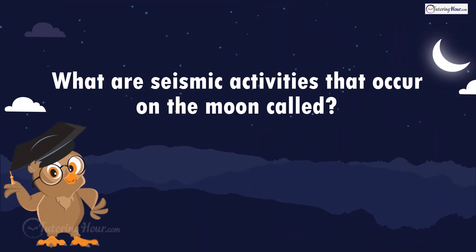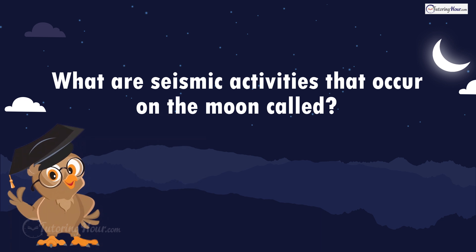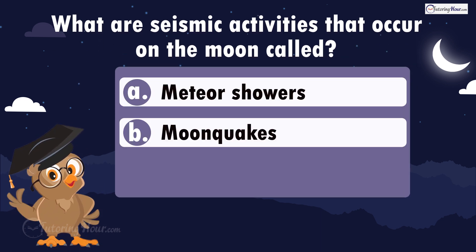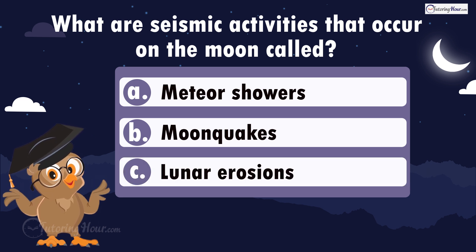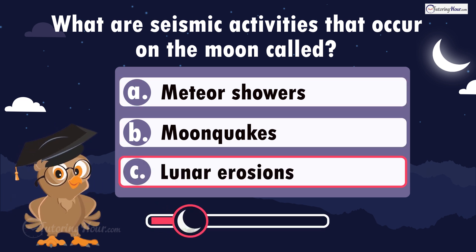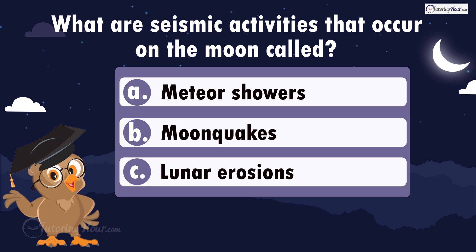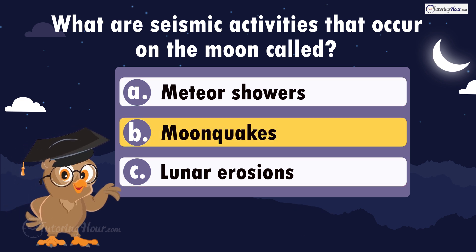What are seismic activities that occur on the moon called? Is it A, meteor showers; B, moonquakes; or C, lunar erosions? The correct answer is moonquakes. They are similar to earthquakes but occur on the moon.